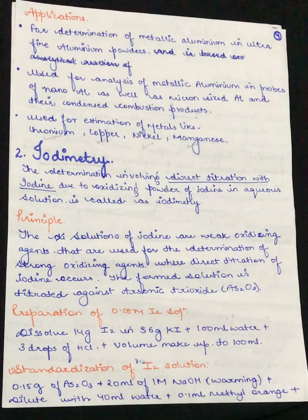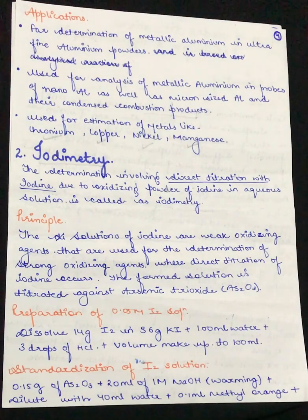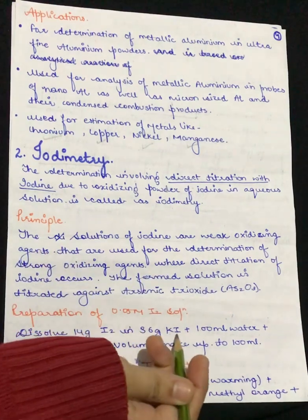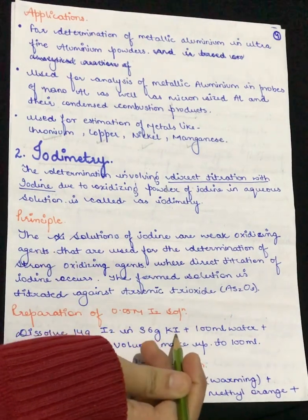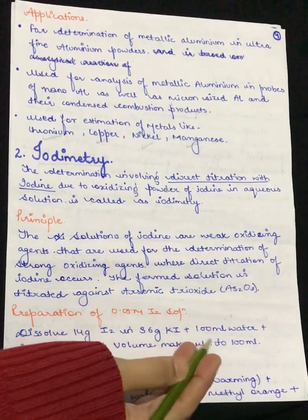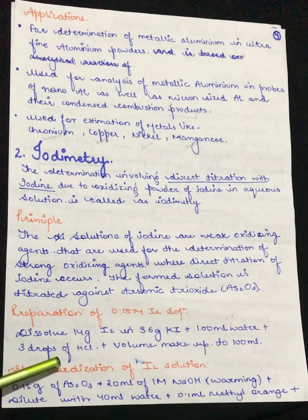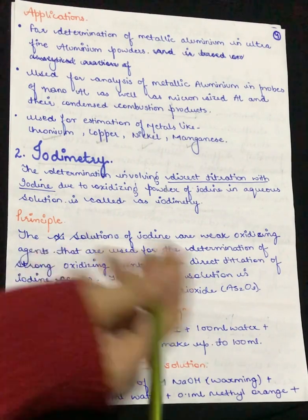Now let's see the preparation of 0.05 molar iodine solution. Dissolve 14 grams of iodine in 36 grams of potassium iodide, then add 100 ml water and three drops of HCl, and the volume will be made up to 1000 ml.